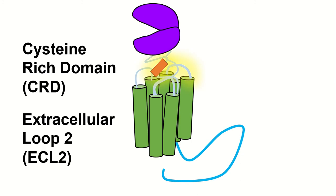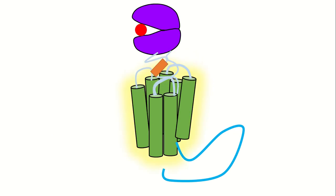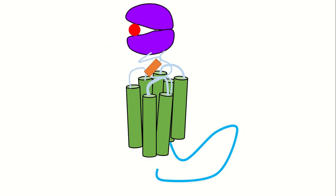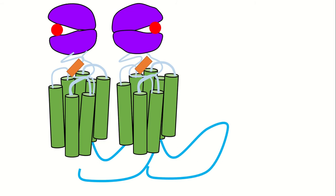The CRD and extracellular loop transmit the conformational changes induced upon glutamate binding to the 7-transmembrane domain, which is connected to an intracellular C-terminus domain. These structural changes lead to the formation of a TM6-TM6 interface within the dimer, which is essential for the activation of MGluR5 because it facilitates G-protein signaling.